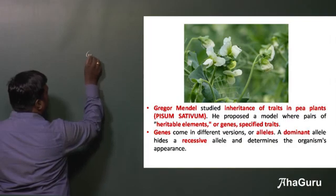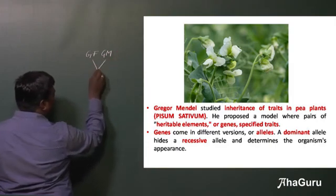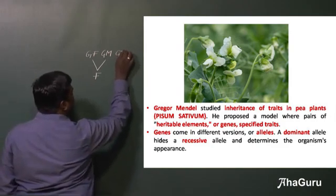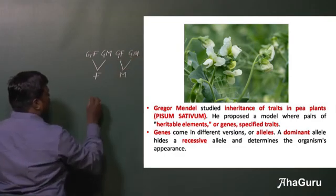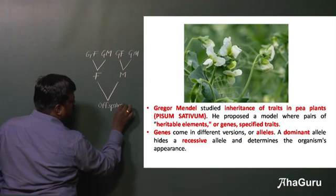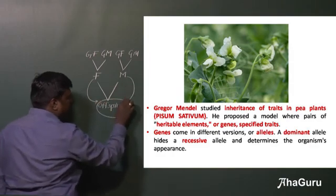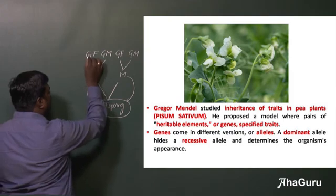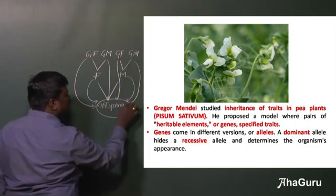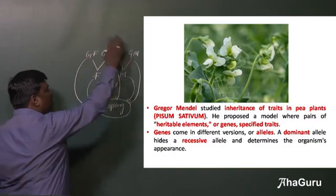For example, your grandfather and grandmother are there. Similarly, your father's grandfather and grandmother, and your mother's grandfather and grandmother. A particular offspring or child has characteristics from the father and mother, and similarly from the grandfather, grandmother, and from the other grandfather and grandmother. So how is this character present in this child? This child has characteristics from all these generations.